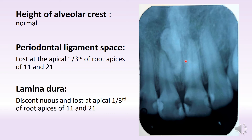Similarly, even in 2-1 you can follow the white line of lamina dura all the way up to the apex or even on the distal surface. But somewhere at the apex it gets blurry and you can't see the lamina dura and PDL anymore. So we have interpreted this as loss of PDL and discontinuous lamina dura at the apex of both 1-1 and 2-1.